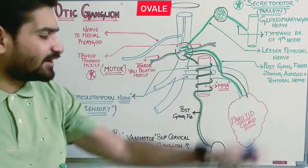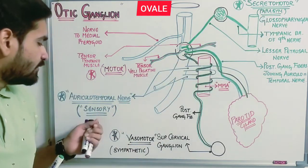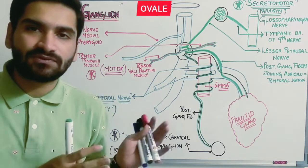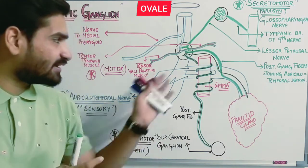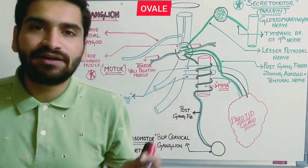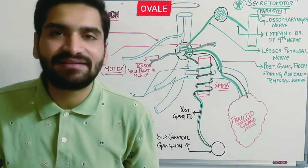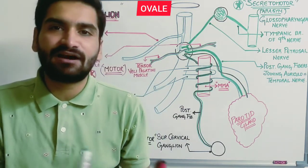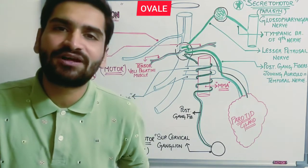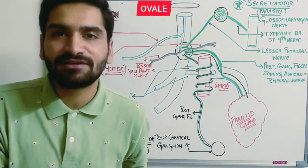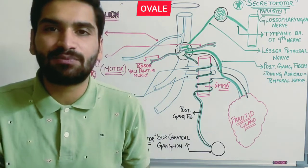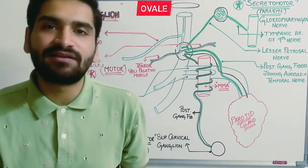So the four connections of the otic ganglion are: secretomotor, vasomotor, sensory, and motor — all necessary in relation to the otic ganglion. If you enjoyed the video, please like, share, and subscribe. For any doubts on other topics, let us know, and don't forget to hit the bell button for regular updates. Thank you.